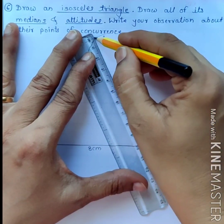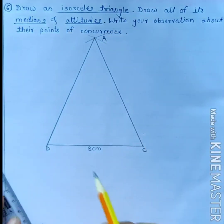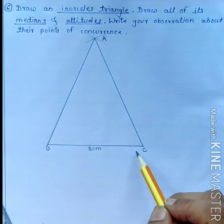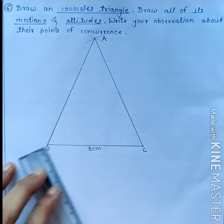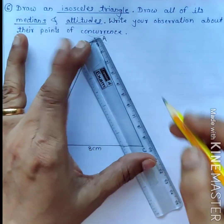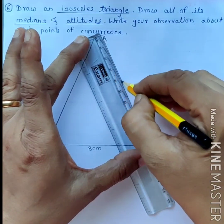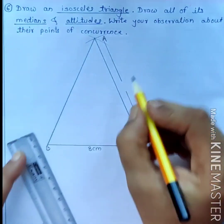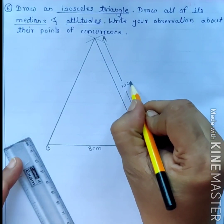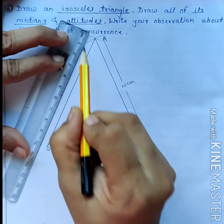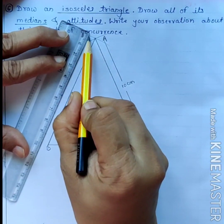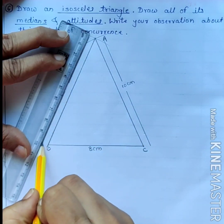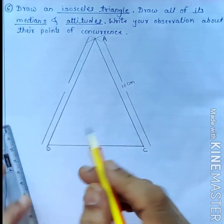This is an isosceles triangle in which sides AB and AC are congruent. The length of these two sides is 10 cm, and the length of side AB is also 10 cm.